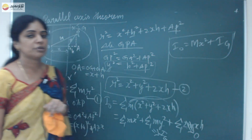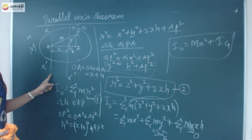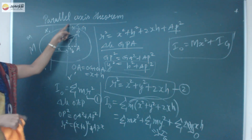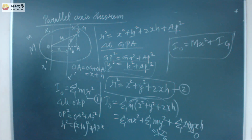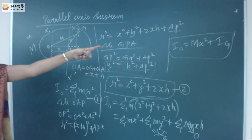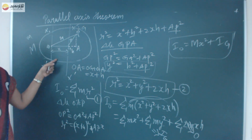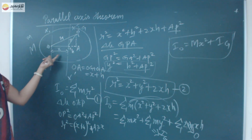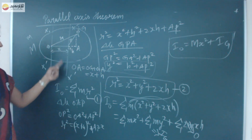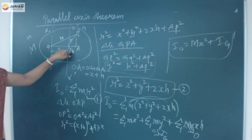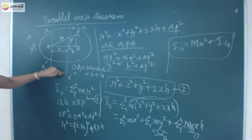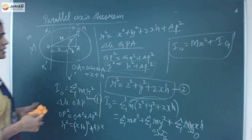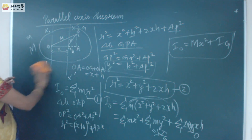By this method, we can find the moment of inertia about any parallel axis at a particular distance from the axis passing through the center of gravity. This completes the parallel axis theorem. The next theorem to consider is the perpendicular axis theorem.